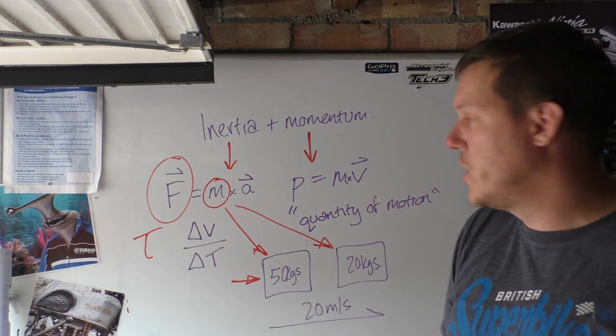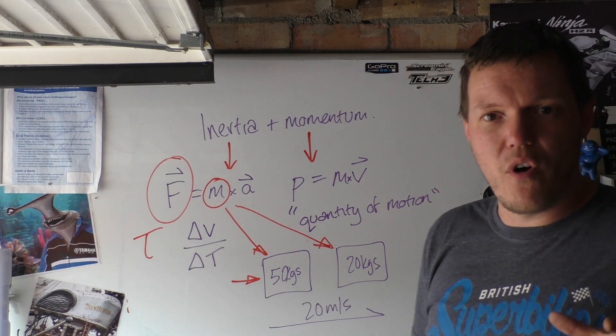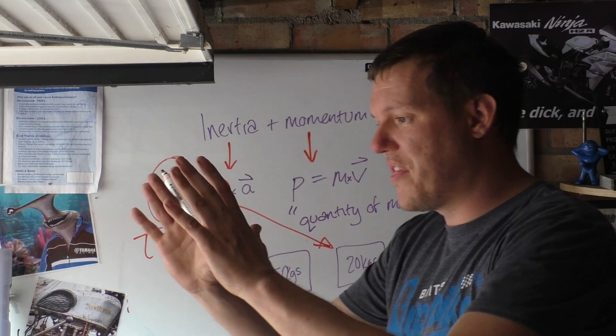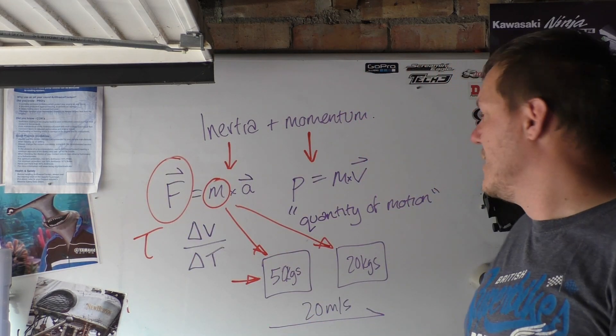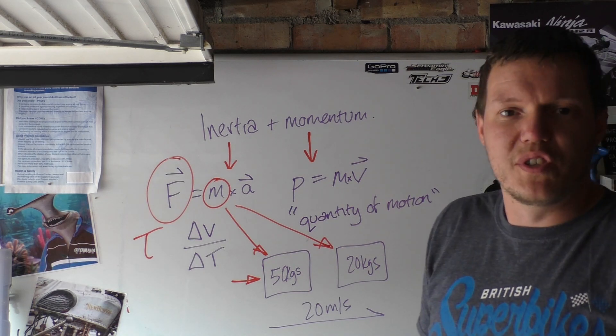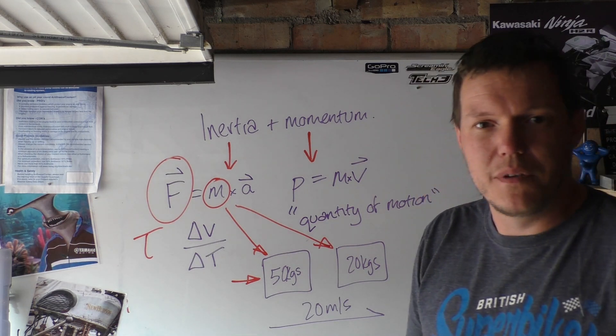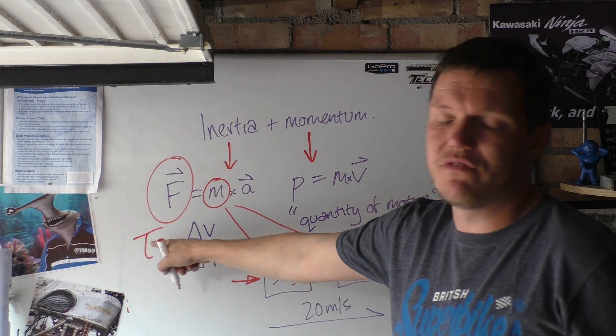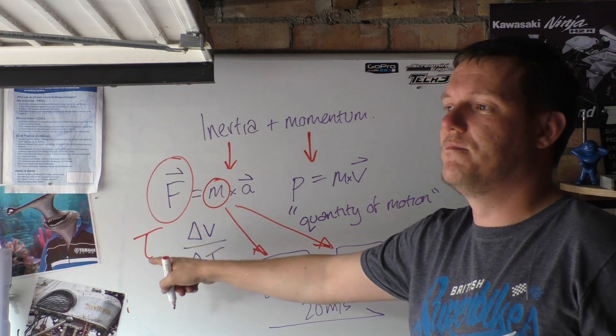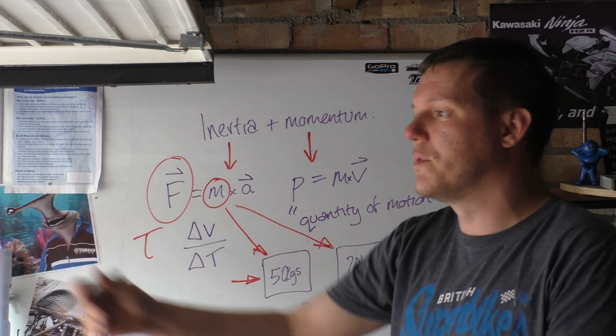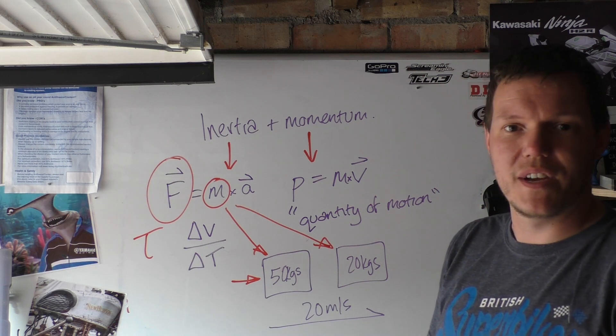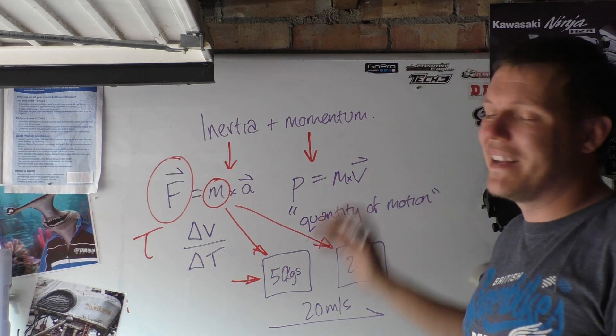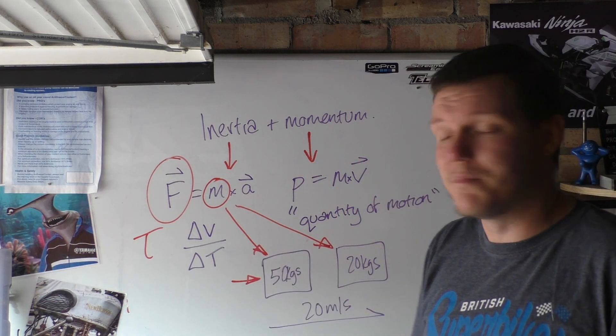So this is the difference between the two. One is how much force do you require to accelerate a mass. The other one is when that thing is moving, how much movement does it have for its weight. Basically, you can work out the energy. Inertia is the amount of energy you require to push something. Momentum in a sense is the amount of energy something has once it's moving.